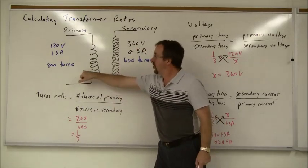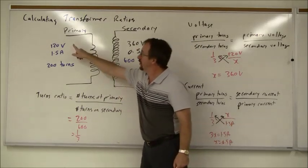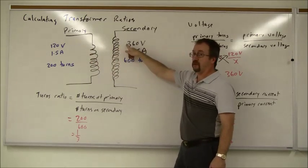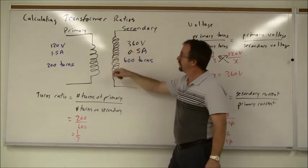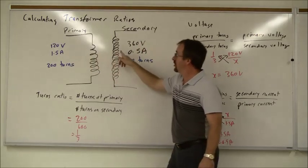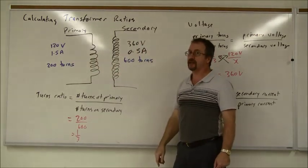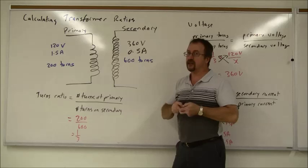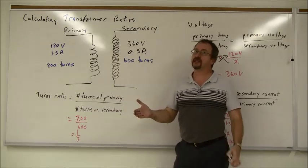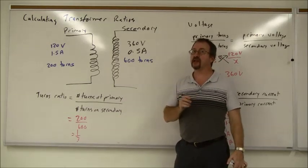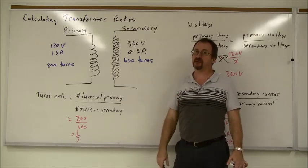So the ratio of one to three in turns, primary voltage was one to three, but the current with reverse side was three to one. So be very careful when you're calculating these things. You treat voltage with the same proportions as the turns, but current inversely proportional.